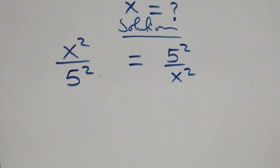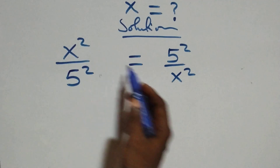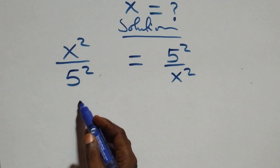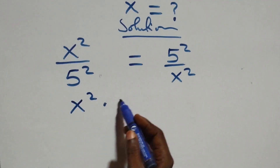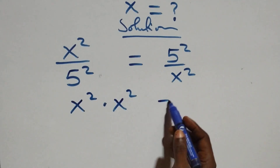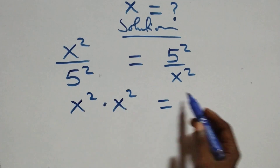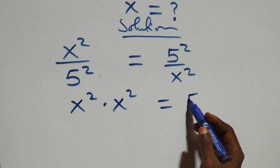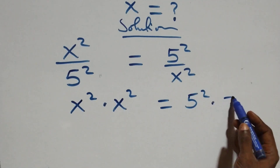The next step here, we cross multiply: x squared times x squared, then equals to also 5 squared times 5 squared on this side.